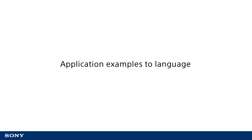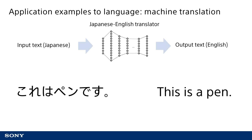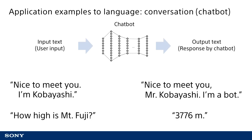Next, I will discuss examples of application to language. One example of great success is machine translation. If the input is a string of Japanese text and the output is English words, training the neural network with a large amount of paired translation data makes it possible to train a Japanese-to-English translation model. Something like a chatbot can be created using the same mechanism, where the input is the user's text message and the output is the chatbot's response.